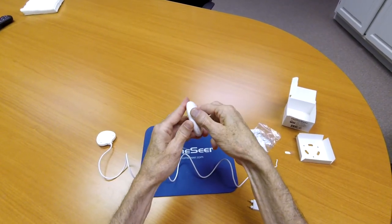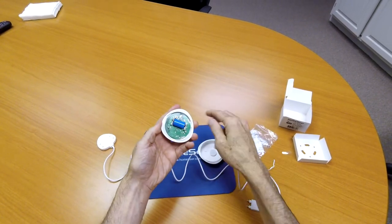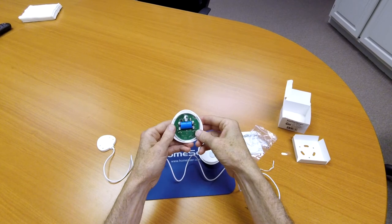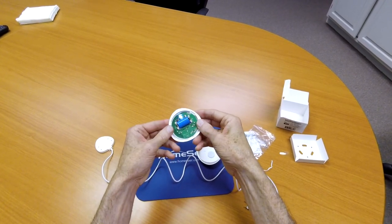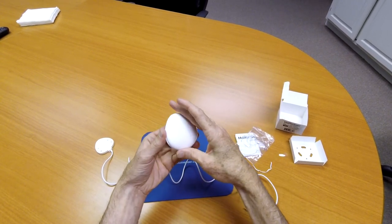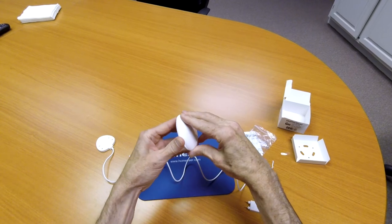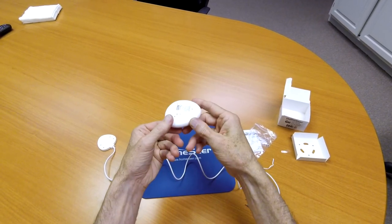To get inside the unit, all you have to do is rotate the top slightly counter-clockwise, and you'll find a lithium battery inside. There will be a plastic pull tab in there, just pull that tab to activate the battery. There's also a little button inside the unit where you can activate the inclusion process to add the leak sensor to your Z-Wave network.